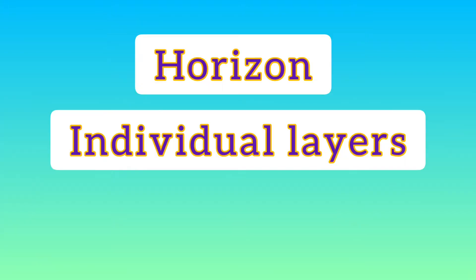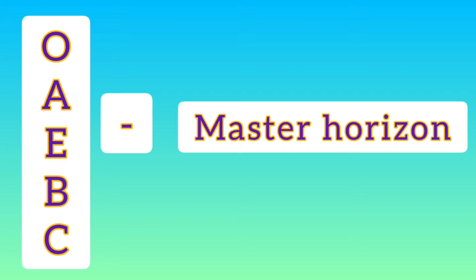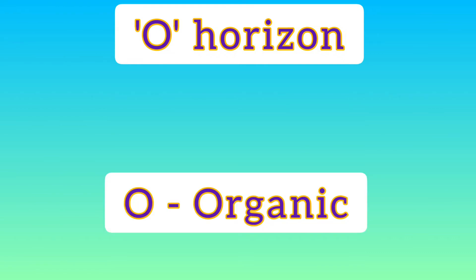The soil profile is the vertical section of the soil through all its horizons and extending into the parent material. Now what is a horizon? The individual layers are regarded as horizons — each layer has its own identity. There are basically four to five different horizons: O, A, E, B, and C, which are known as master horizons.